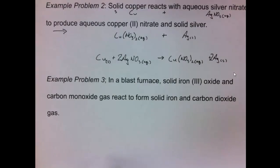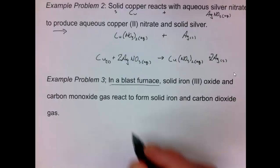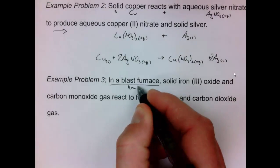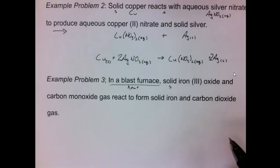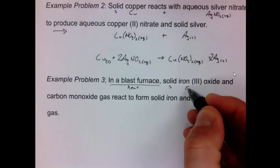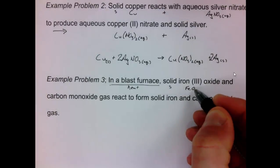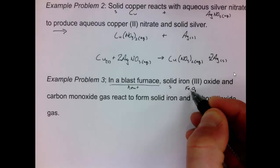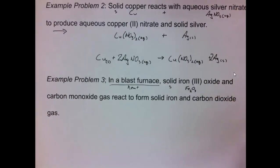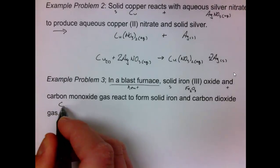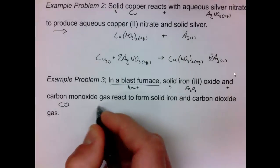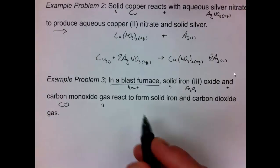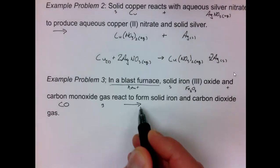For my third example problem it says in a blast furnace so this is going to mean that there's heat involved. I have solid iron three oxide so if it's iron three it's plus three oxides minus two so I would need to have Fe2O3 and means plus carbon monoxide so that's a molecular formula covalent formula it's a gas it says react to form solid iron.